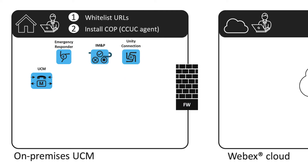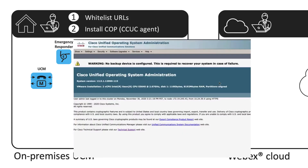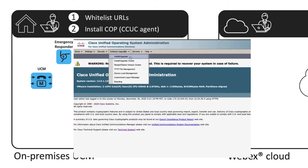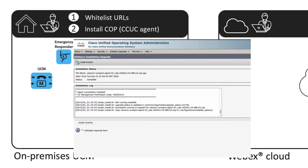The cop file is going to run a pre-check of the network connection to the cloud. Hence, it's important to make sure the firewall is properly configured.